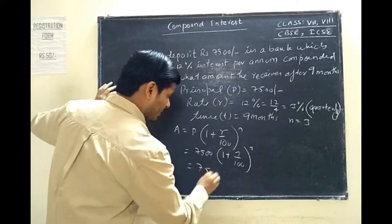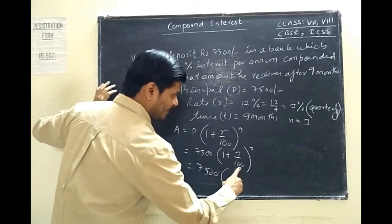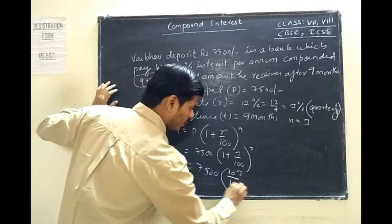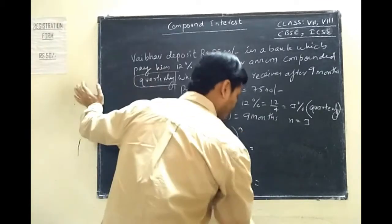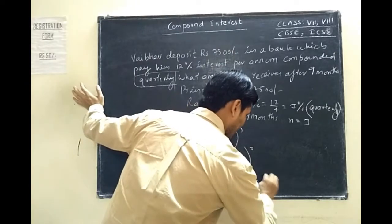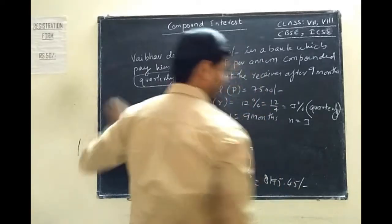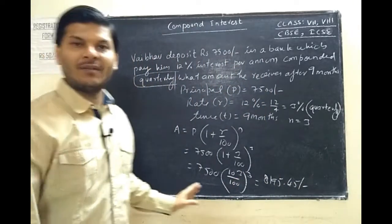So 7500, we can write it as 100 plus 3, upon 100, raised to power 3. Solving this calculation, we get 8195.45. You can solve this part yourself.